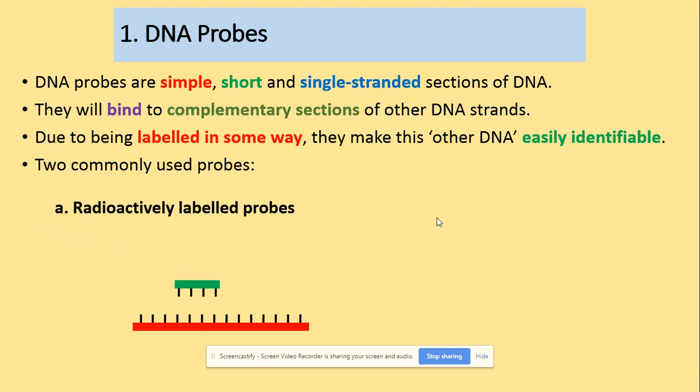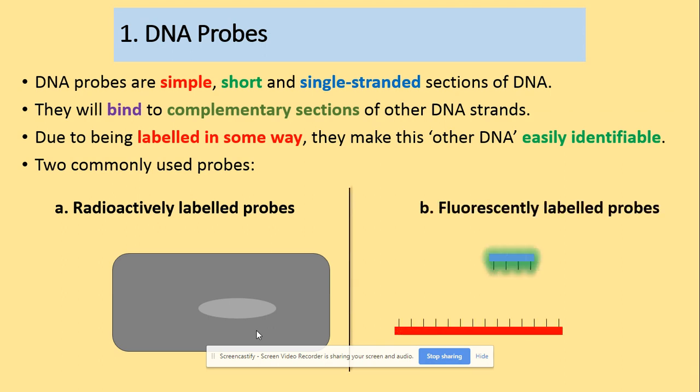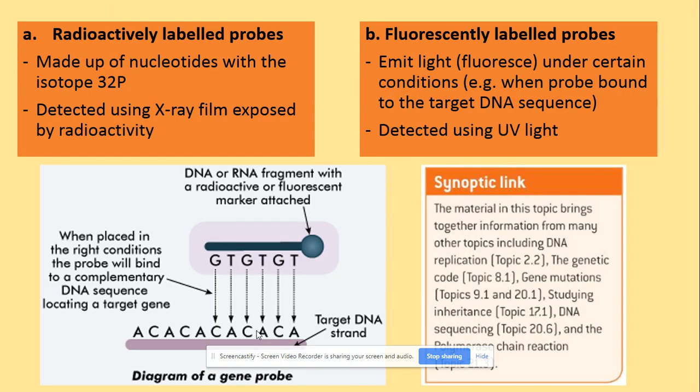We have two common types of probes. First, radioactively labelled probes — if they bind to a DNA sample, they are identified using X-ray film. We also have fluorescently labelled probes — if they bind to the DNA of interest, they will glow. Radioactively labelled probes are made using isotopes of phosphorus-32, while fluorescently labelled probes emit light or fluorescence under certain conditions, detected using UV light.